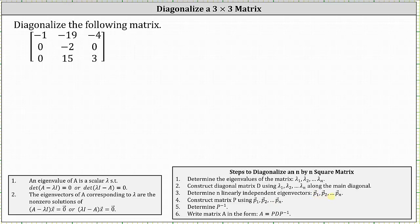Step four, we construct matrix P using the eigenvectors as the columns. Number five, we determine the inverse of matrix P. And then finally, step six, we write the given matrix in the form A equals matrix P times matrix D times the inverse of matrix P.